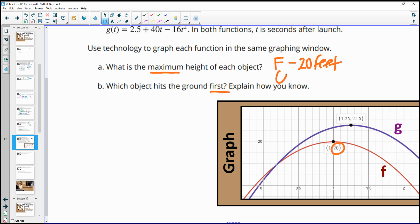and for, or sorry, that's probably, is it object F? Object A, which is represented by function F, and then object B is represented by the graph of G, so that's 27.5 feet, and then it says which object hits the ground first, and oops,